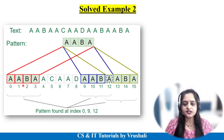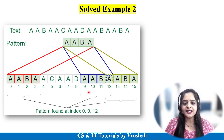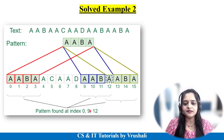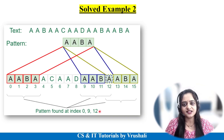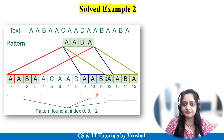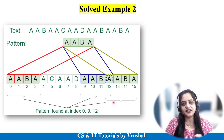After finding the pattern at index 0, checking continues from the first index onward — second, third, fourth, and so on. The pattern AABA is again matched at index number 9, meaning the pattern appears a second time in the text at index 9. Checking continues from the tenth index, eleventh, and then the twelfth index — where AABA matches again. So the pattern is present in the text three times, at indices 0, 9, and 12.